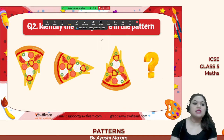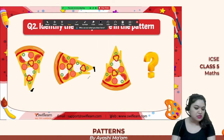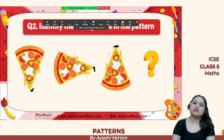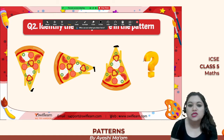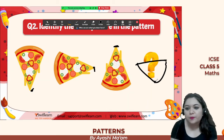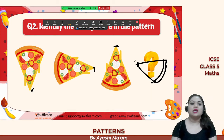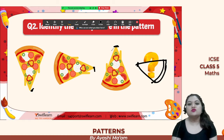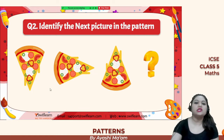Identify the next picture in the pattern. The tip of the pizza is facing downwards, then towards the right, then upwards, then towards the left — so downwards, right, up, left. The next pizza tip is going to face towards the right.